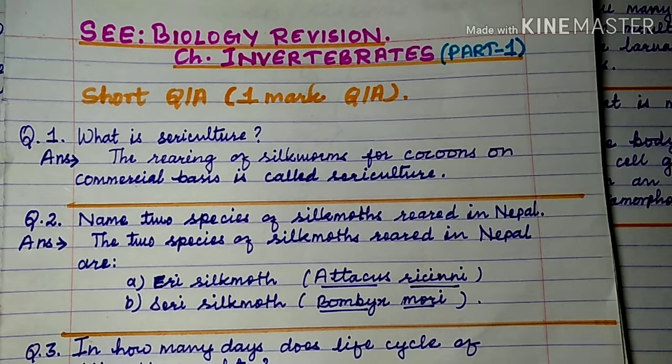Question number 1: What is sericulture? The rearing of silkworms for cocoons on a commercial basis is called sericulture.